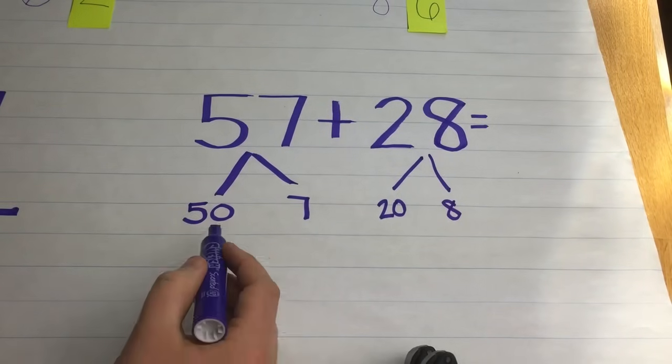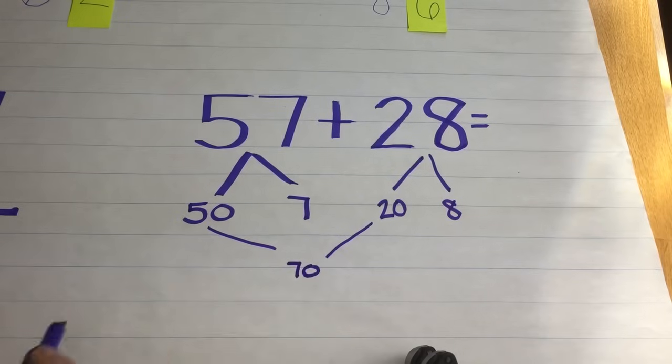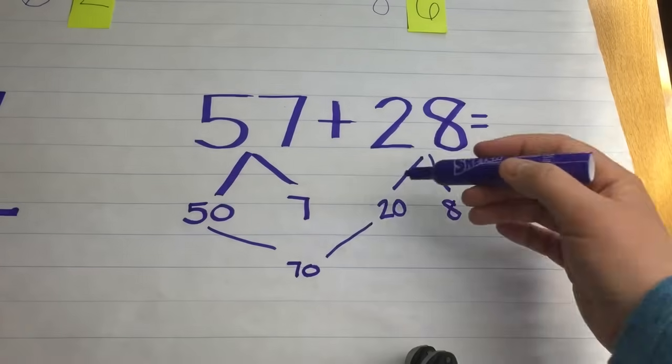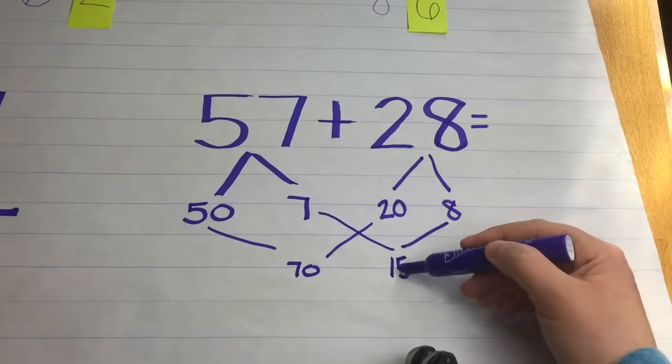From there, they're going to take the two-digit numbers, the 20 and the 50. When added together, that equals 70. And then take the 7 and the 8. When added together, that is 15.